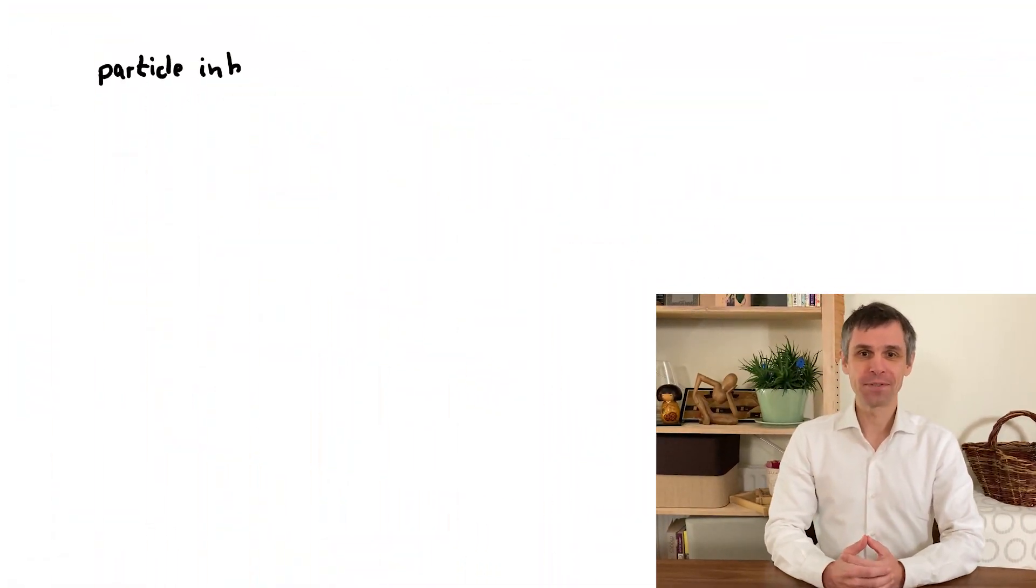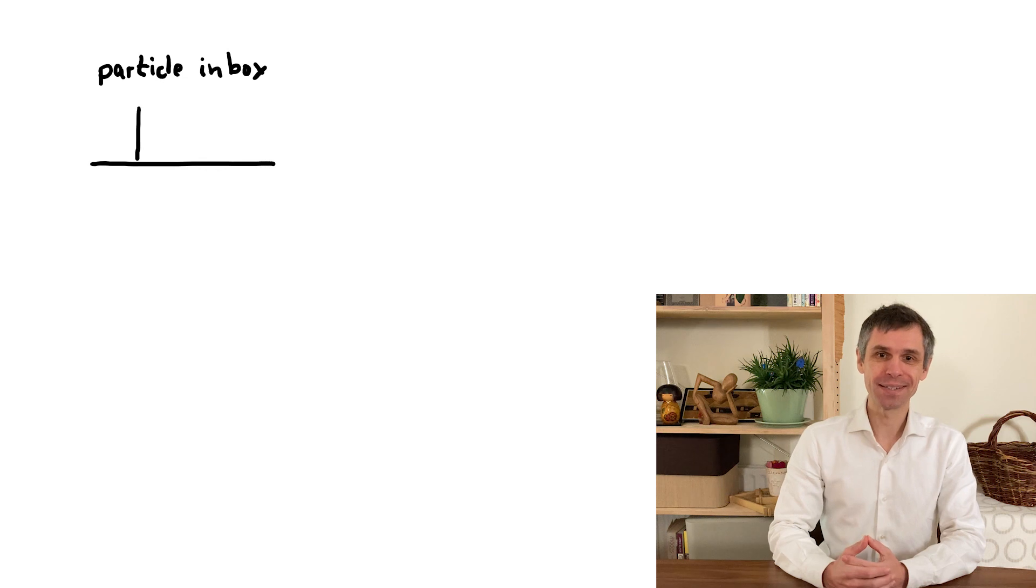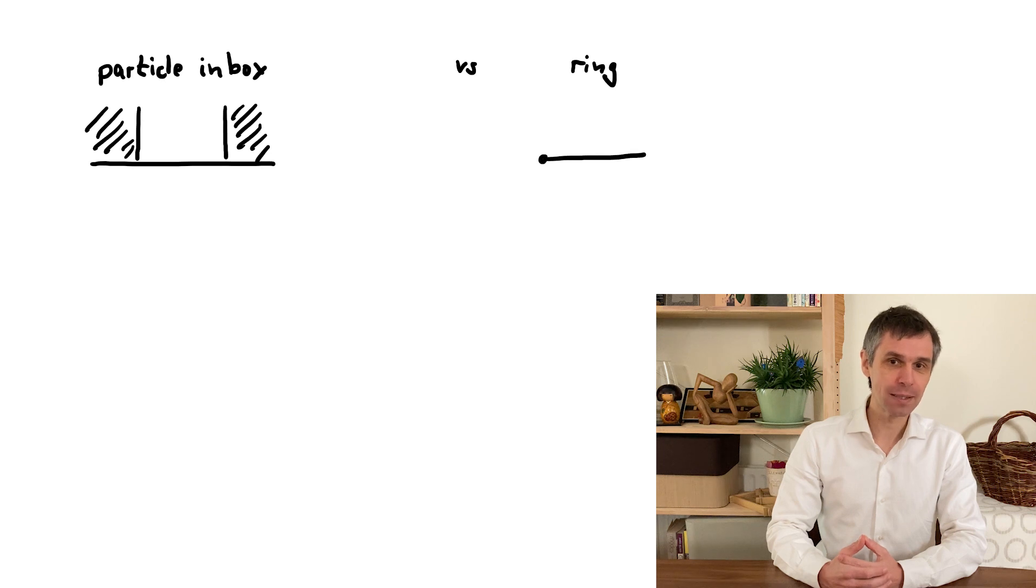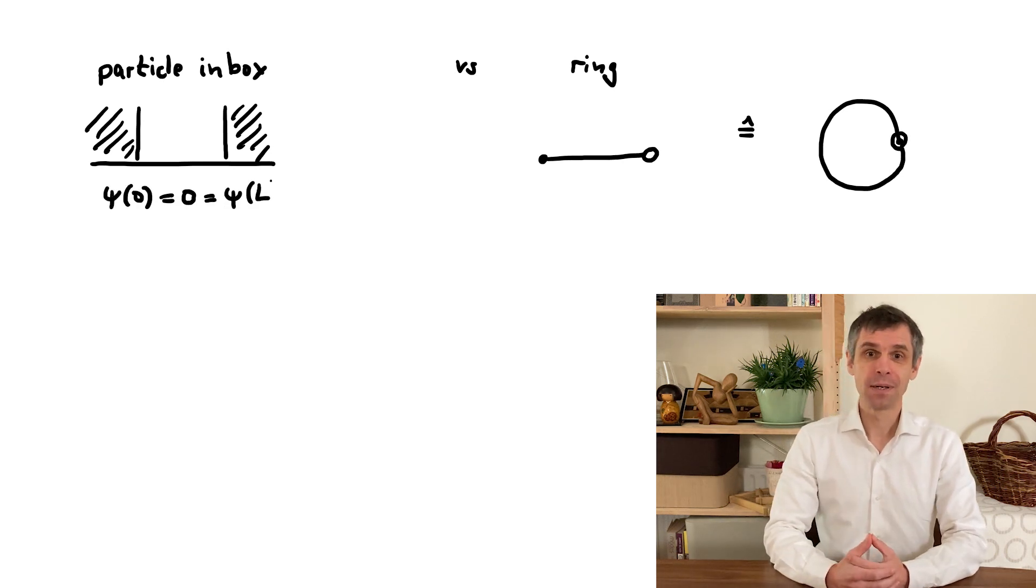For this, recall how we emphasized for the particle in the box that the boundary conditions reflect a very particular situation, namely that the system is terminated by hard walls stretching to infinity. For instance, you could also consider a system where the line segment represents a ring where you would apply so-called periodic boundary conditions.